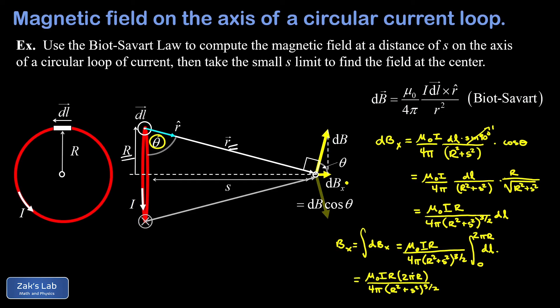We can cancel a factor of 2-pi, leaving a 2 in the denominator, and combine the R factors in the numerator. The result is: Bx equals mu-naught I R squared divided by 2 times the quantity big R squared plus s squared, all raised to the three-halves power. This is our general expression for the magnetic field on the symmetry axis of a ring of current.